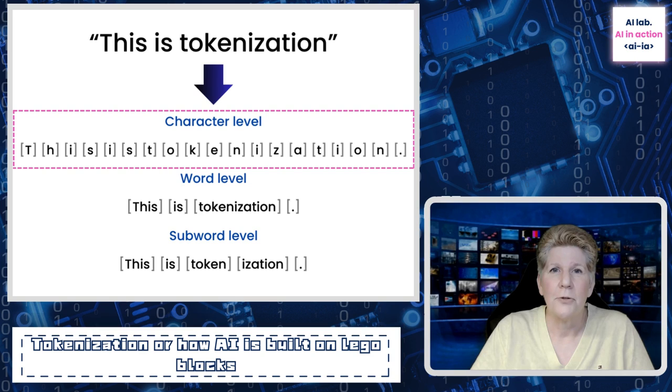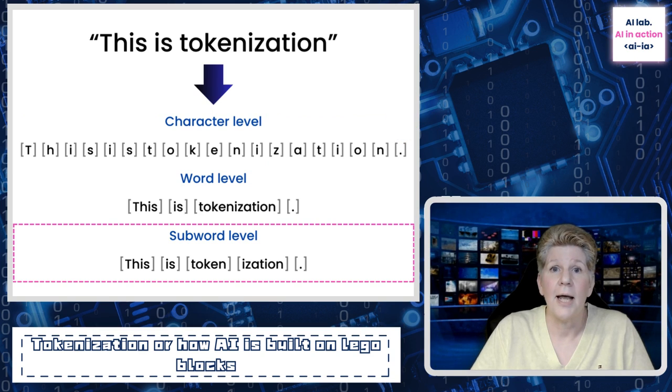That's called character tokenization. And then there's even subword tokenization, where you break a text into units that might be larger than a single character, but smaller than a full word. For instance, chatbots could be tokenized into chat and bots.